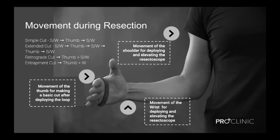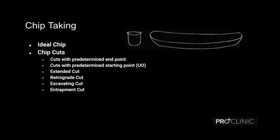Coming to the ideal chip — it has to be a keno-shaped chip. The way to cut a keno-shaped chip is to cut with a predetermined endpoint in mind or with a predetermined starting point in mind. There is also an extended cut, a retrograde cut, an excavating cut, and an entrapment cut. Usually what we use is a cut with a predetermined endpoint in mind: we keep the resectoscope at a particular place, we do not move the resectoscope, we just move the loop, dig in, and then with movements at the thumb, wrist, and shoulder level we take a keno-shaped chip and ultimately lift off the resectoscope.